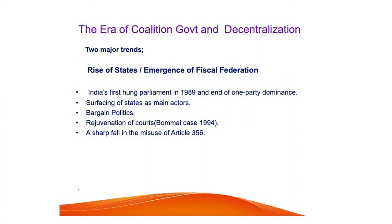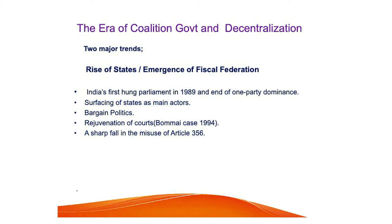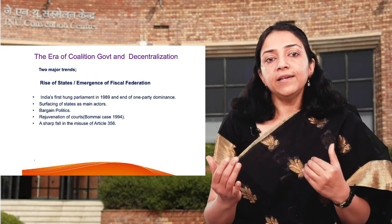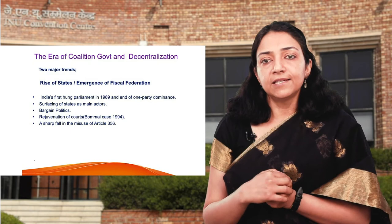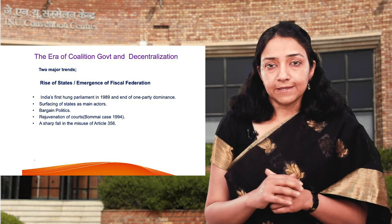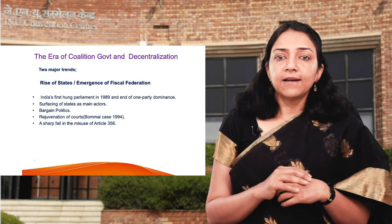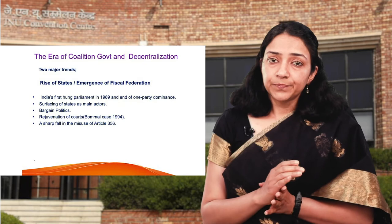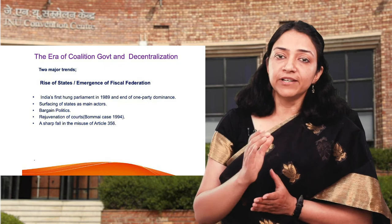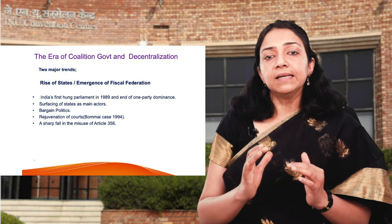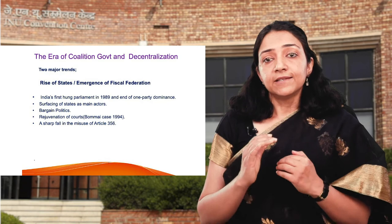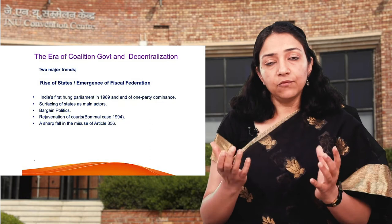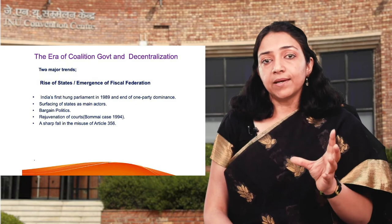The most important era is the coalition government era, known for two major trends: the rise of states and the emergence of fiscal federation. India's first hung parliament was created in 1989, ending the dominance of the one-party system. States and regional parties emerged as the main actors of politics because they were sharing power with the centre on their own terms, having a role in allocation of ministries and a say in every important central government decision. A bargain politics emerged — the most volatile and opportunistic phase of Indian politics.